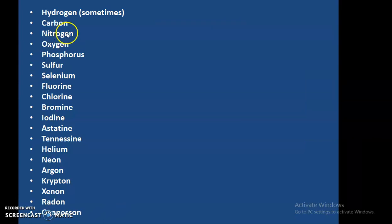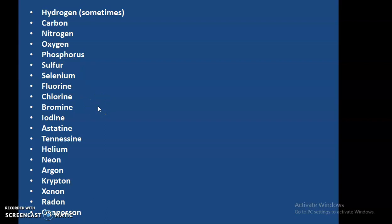Here are the names of all the non-metals — you should write these down as they will be helpful in higher classes too: hydrogen, carbon, nitrogen, oxygen, phosphorus, sulfur, selenium, fluorine, bromine, iodine, astatine, tennessine, helium, neon, argon, krypton, xenon, radon, and oganesson.